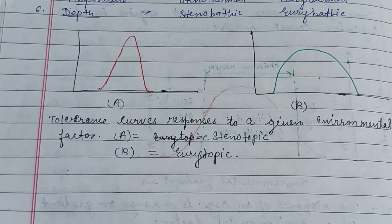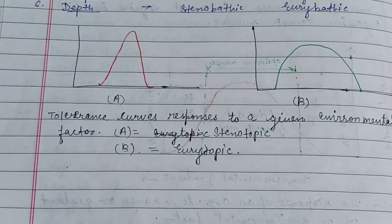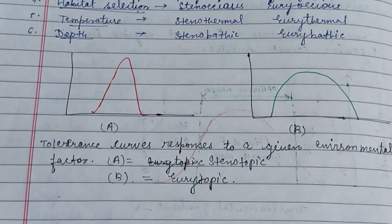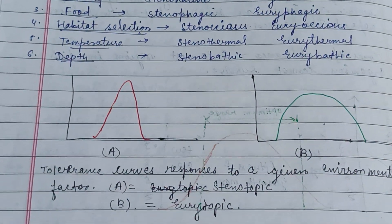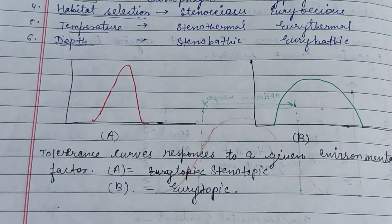Here is a graph of eurotopic and stenotopic. This is all about Schaeffer's Law of Tolerance. Keep watching. Thank you.